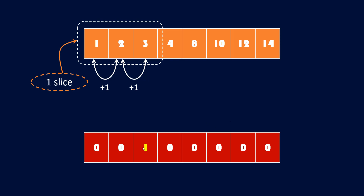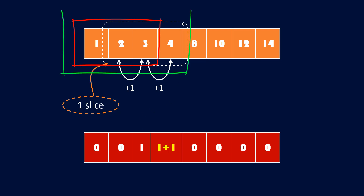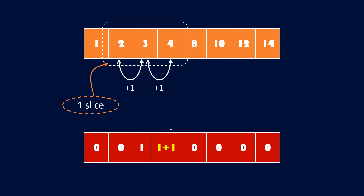Moving one step ahead, this also forms an arithmetic slice, so one more slice is possible. But the previous position also had one slice. So we can have an additional slice by taking all elements from the previous and current window into consideration. That's why we take 1 plus the value at i-1 position, using the previous DP result.